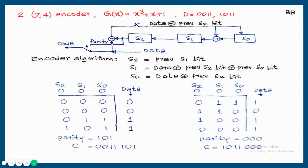Example 2: a 7,4 encoder with a different generator polynomial G(x) = x³ + x + 1. Like the previous case, make all the standard connections. The only difference is that now x is present between MSB and LSB, so the XOR is between S0 and S1 — compared to the previous case where x² gave XOR between S1 and S2.